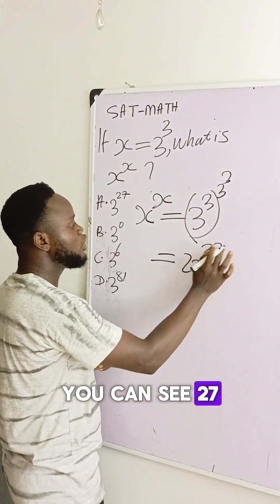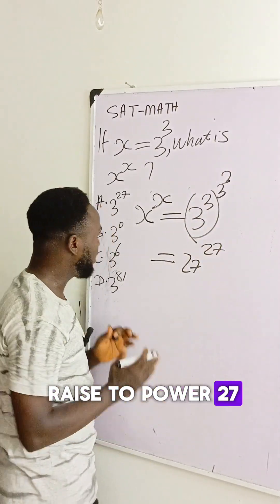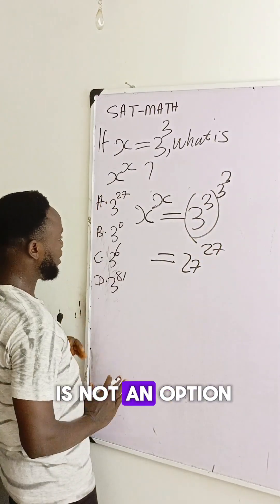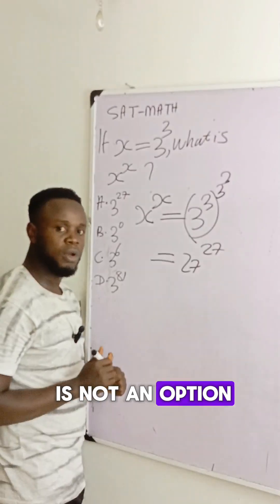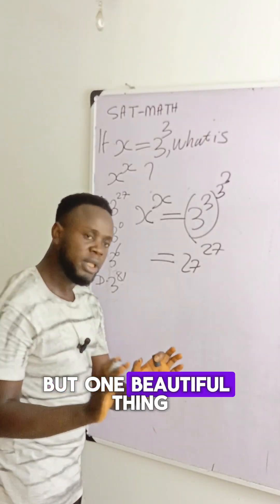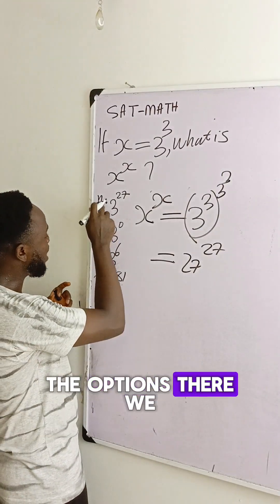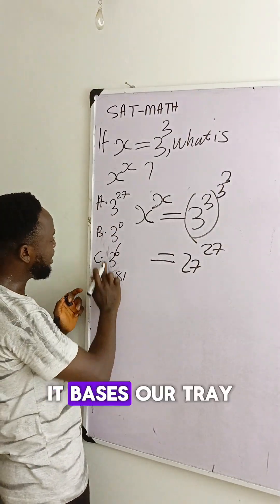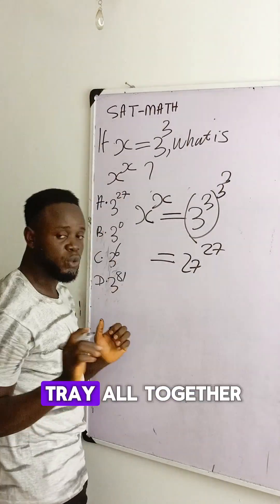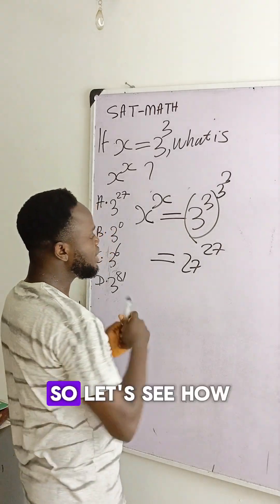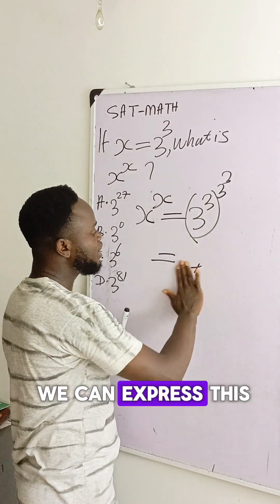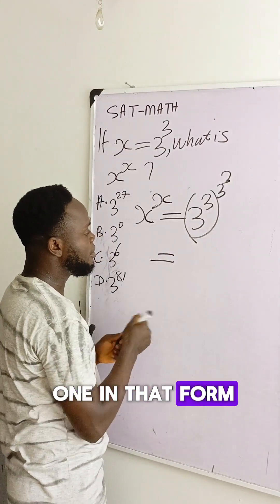You can see 27 raised to the power 27, but 27 is not in the options. One beautiful thing is that in all the options there, we have the base of 3 all together. So let's see how we can express this in that form.